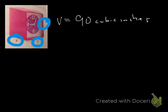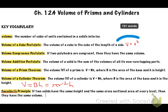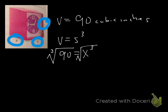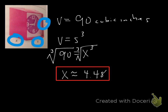How do we find the volume of a cube? We said earlier that the volume of a cube equals side cubed. So we know that 90 equals side cubed — or in this case, 90 equals x cubed. To solve for x, we need to take the cube root of 90. The cube root of x cubed gives you x, so x equals the cube root of 90, which is approximately 4.48 inches.